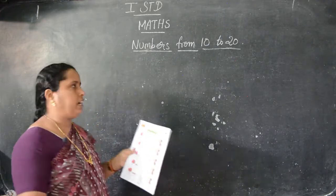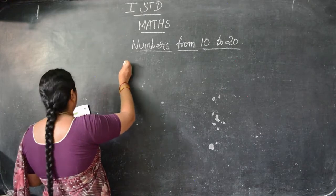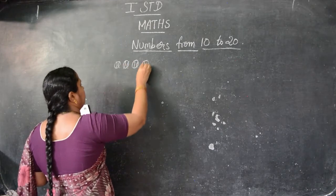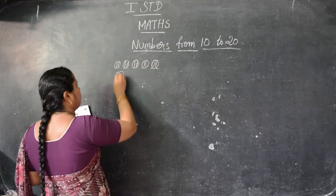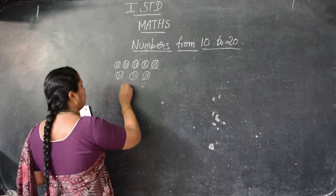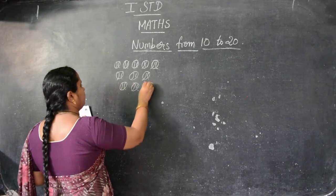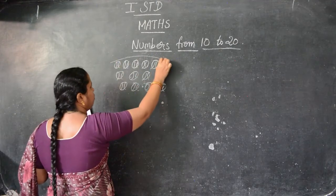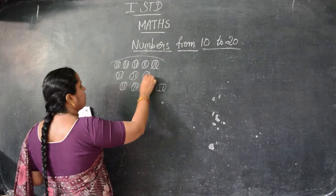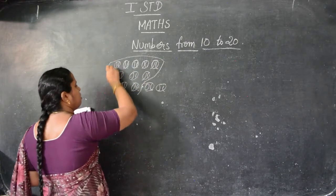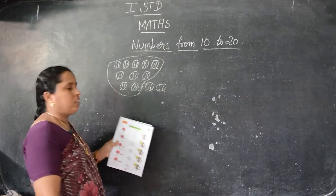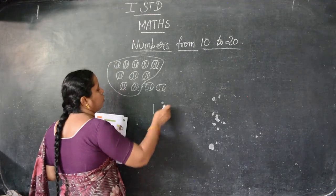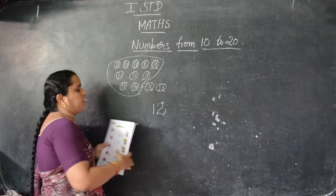In previous classes we saw grouping — we have to group 10. Here see: 1, 2, 3, 4, 5, 6, 7, 8, 9, 10. So we are grouping 10. Group like this — this is 1 group of 10. So you have to write 1 here — 1 group. Then how many remaining? 2. So we write 2 here. So what number is this? This is 12.